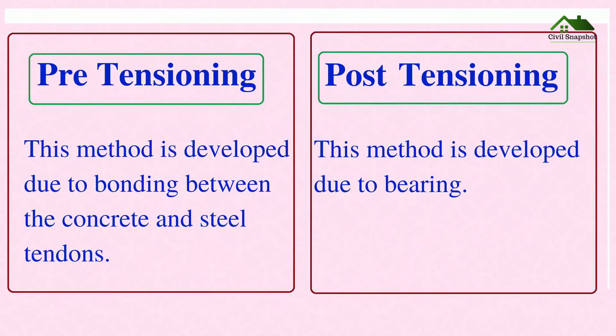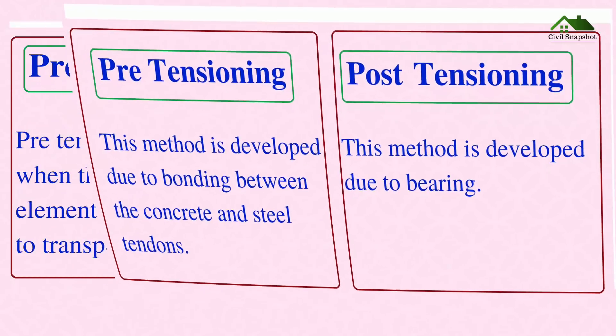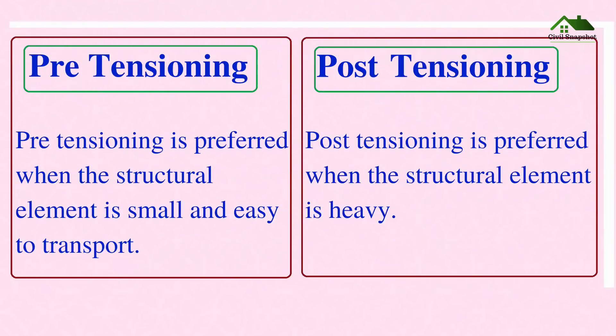Pre-tensioning is developed due to bonding between the concrete and steel tendons, whereas the post-tensioning method is developed due to bearing. Pre-tensioning is preferred when the structural element is small and easy to transport, while post-tensioning is preferred when the structural element is heavy.